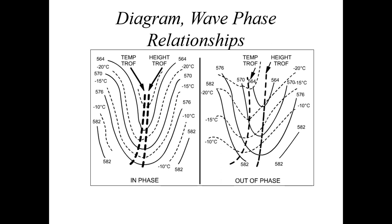The image on the right shows an out-of-phase example. Notice the temperature trough — the dashed line — is well to the west of the height trough. The dashed isotherm lines cross over and intersect the solid height contour lines — that's an example of an out-of-phase relationship. Very importantly, the out-of-phase relationship generally promotes storm development, whereas the in-phase relationship on the left does not promote storm development.